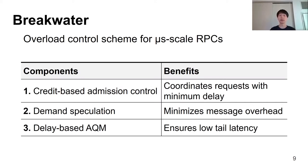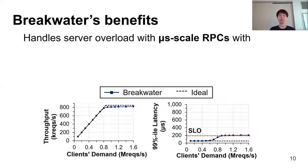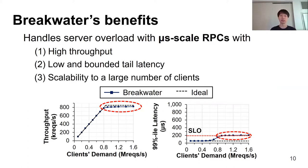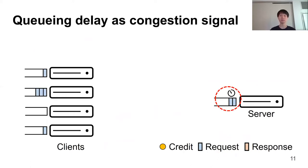In this work, we present Breakwater, an overload control scheme for microsecond-scale RPCs, which employs credit-based admission control to coordinate requests with minimum delay, demand speculation to minimize message overhead, and delay-based AQM on a short queue to ensure low tail latency at all times. Breakwater effectively handles server overload with microsecond-scale RPCs, achieving high throughput and low and bounded tail latency. In addition, Breakwater is scalable to a large number of clients.